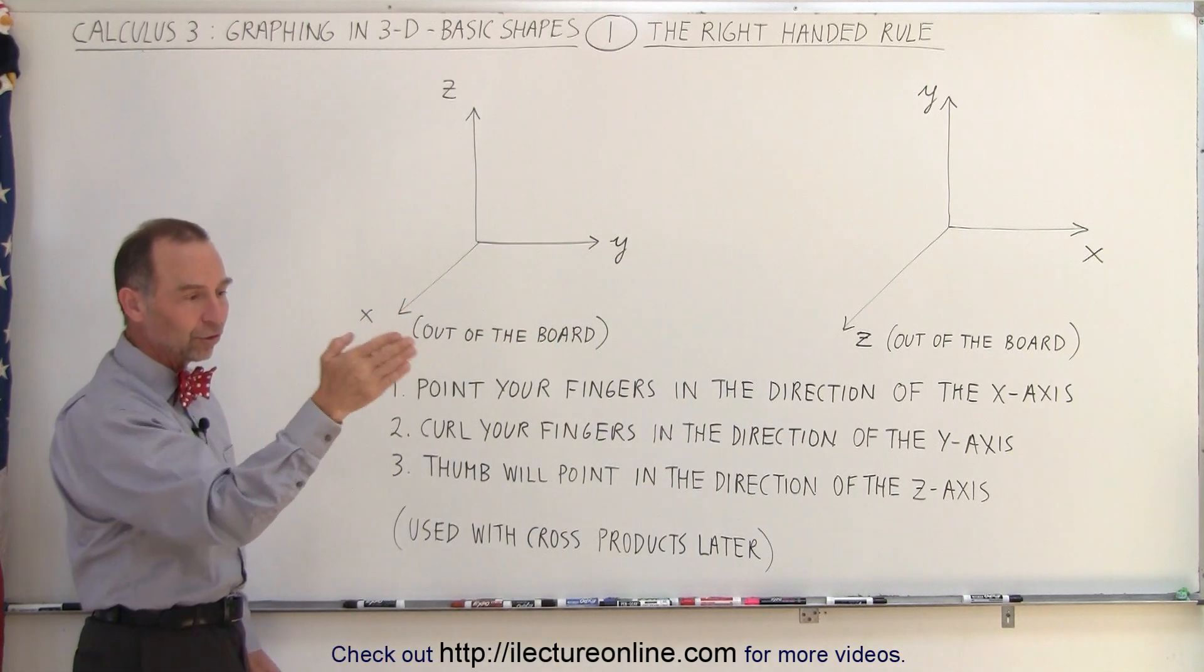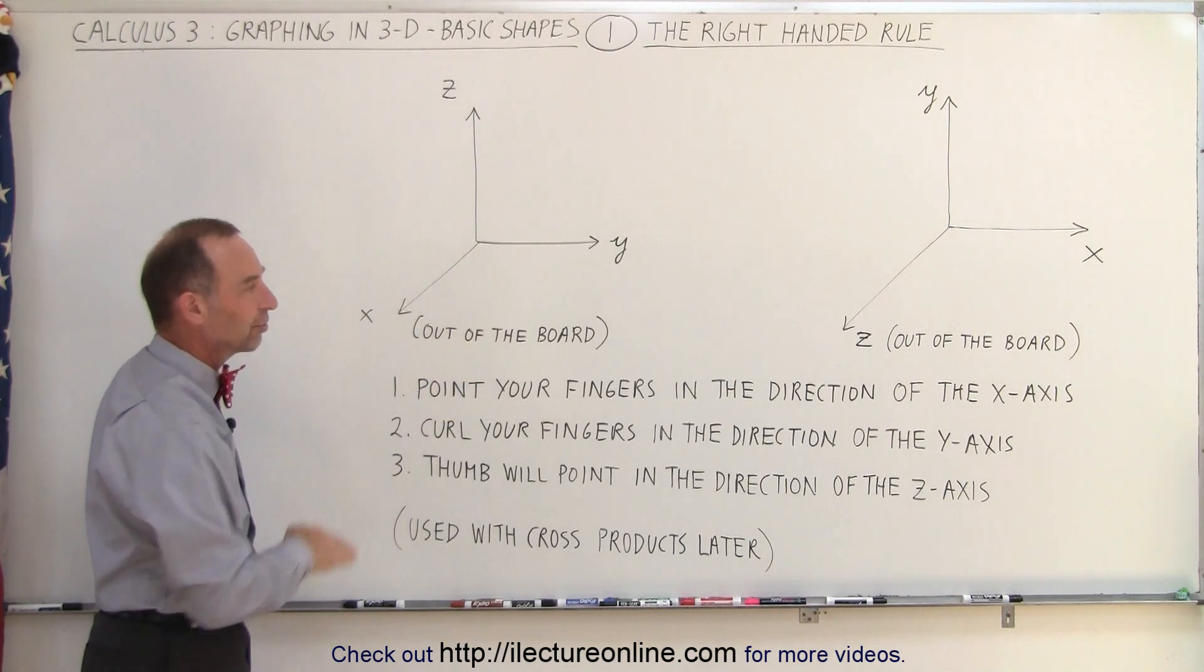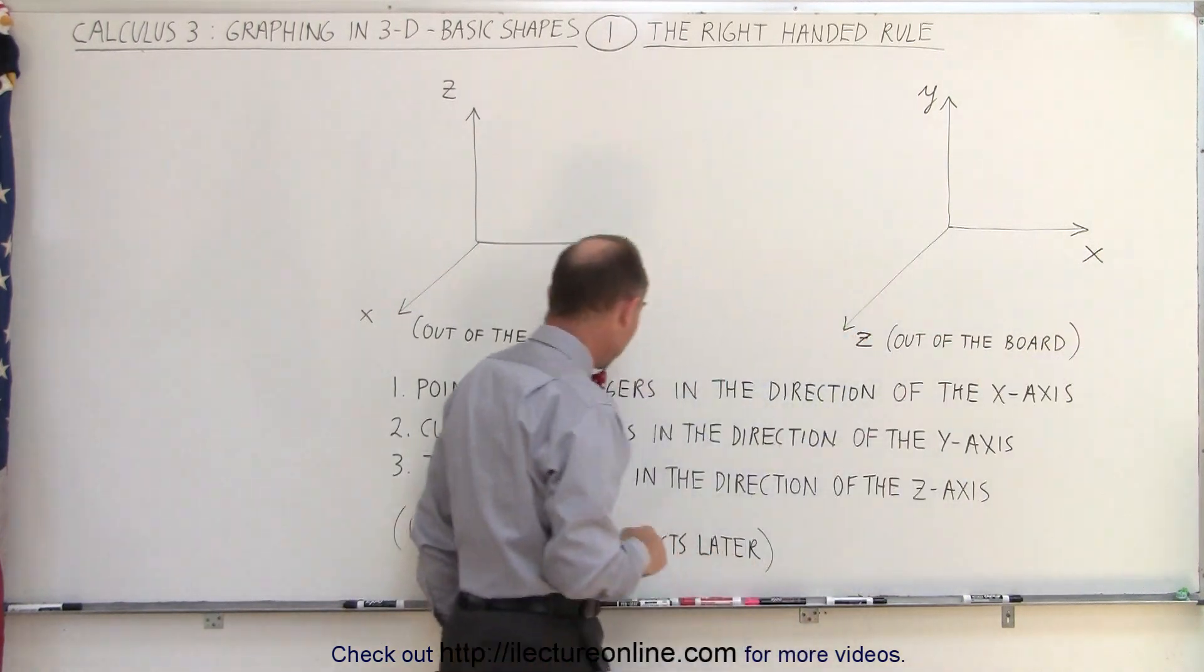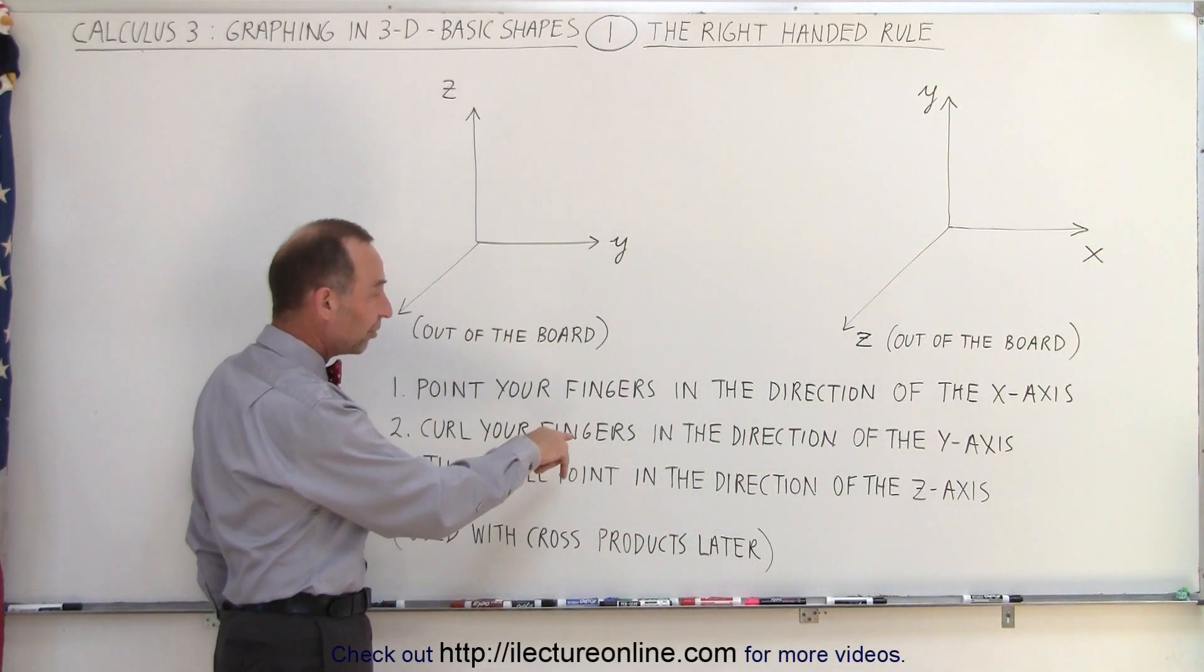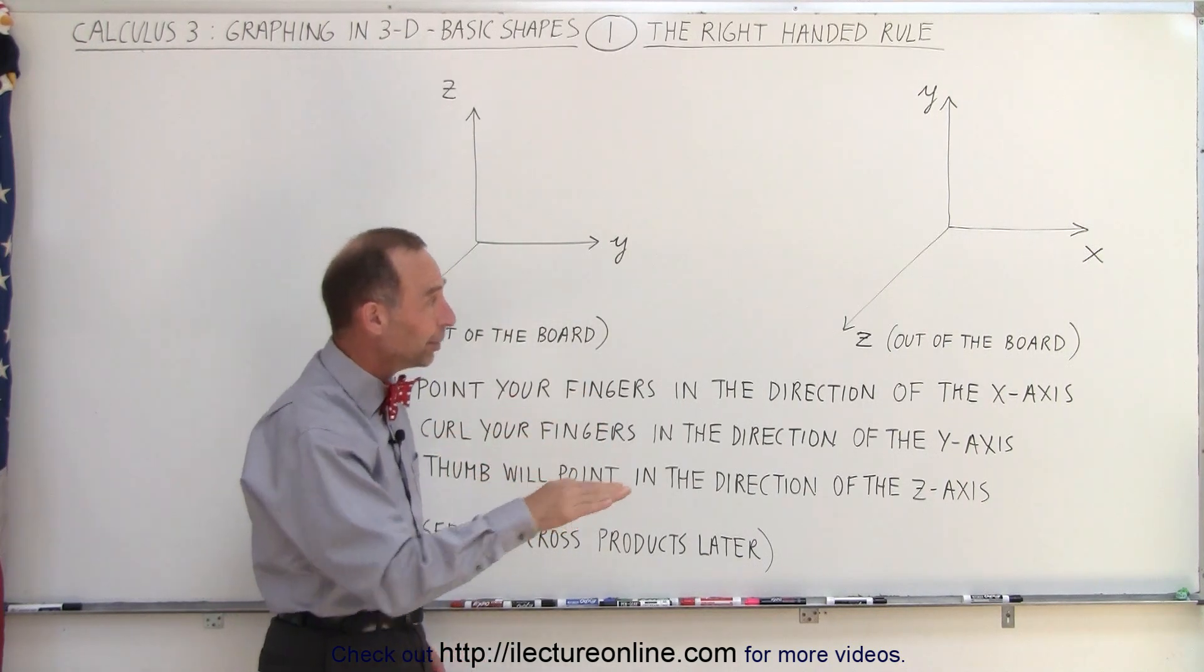So you take your right hand, straighten it out like this, and the first thing you do is point your fingers in the direction of the x-axis. So we'll go ahead and do that over here, point in the direction of the x-axis. Then the next thing we want to do is curl your fingers in the direction of the y-axis. In order to do that, you may have to turn your hand around to make that happen.